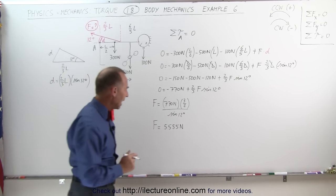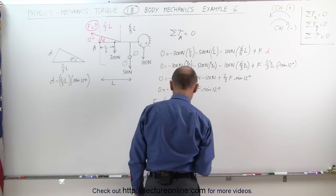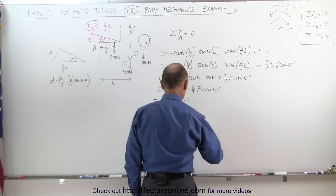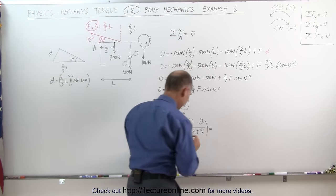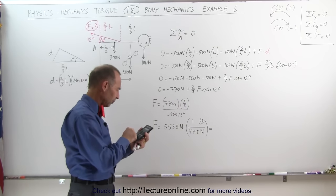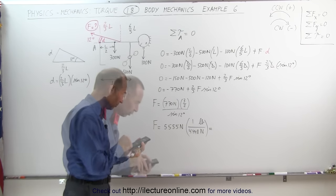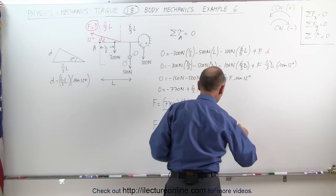Let's put that in pounds as well. For our friends that like pounds better than newtons, one pound is 4.448 newtons, and if we divide this by 4.448 equals roughly 1250 pounds.